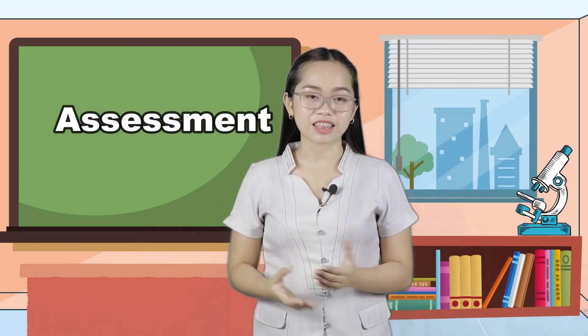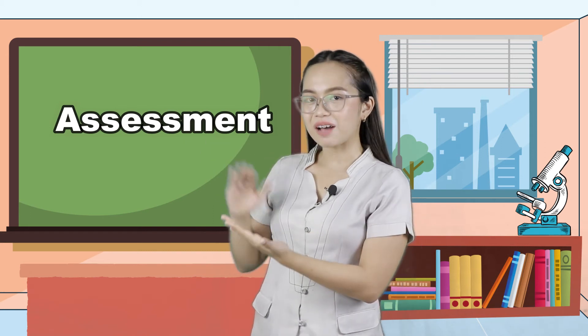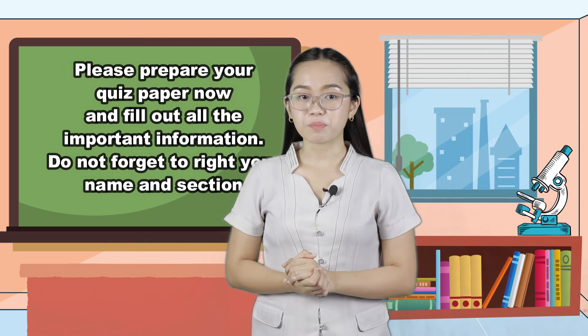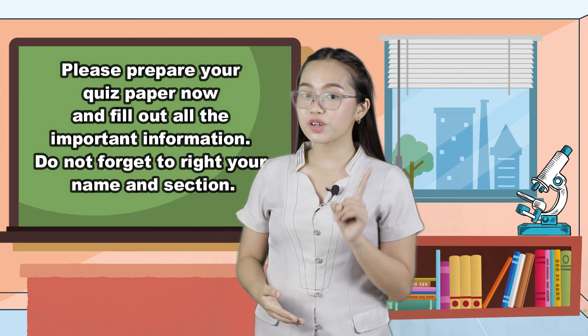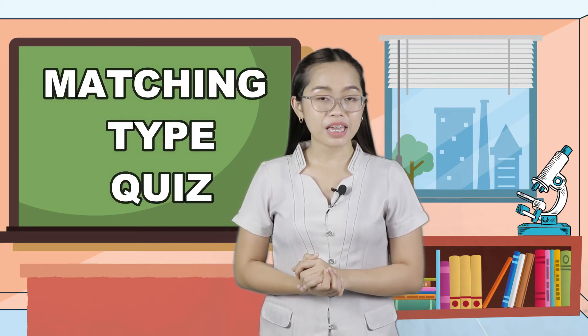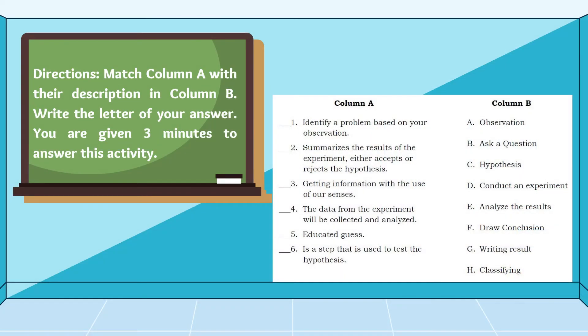Consider yourselves scientists! This time, let us have an assessment to measure what you have learned throughout the session. Please prepare your quiz paper now and fill out all the important information. Do not forget to write your name and section. This will serve as your quiz for today. This is a matching type quiz — make sure you answer it honestly. Directions: Match column A with their description in column B. Write the letter of your answer. You are given 3 minutes to answer this activity.